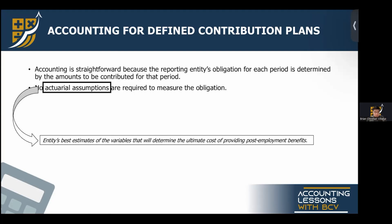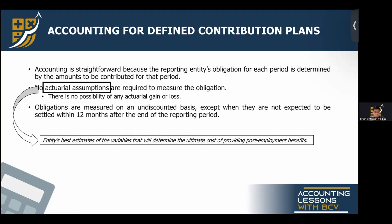Since there are no actuarial assumptions under defined contribution plans, there is no possibility of actuarial gains and losses. This keeps the accounting simple. Under DCP, obligations are measured on an undiscounted basis — these are absolute amounts — unless they are not expected to be settled within 12 months after the end of the reporting period, in which case we measure on a discounted basis. Normally, DCP problems are straightforward.